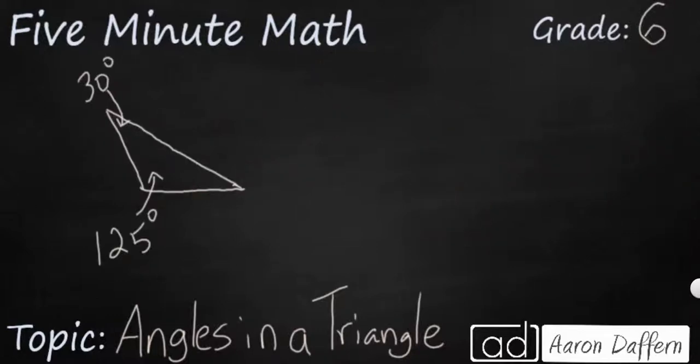So here's an example of what you might get. You might get a triangle. This is an obtuse scalene triangle. And they give you two of the measurements. The larger angle is 125 degrees, and one of the smaller angles is 30 degrees. So we're looking for the measurement of this angle right here.